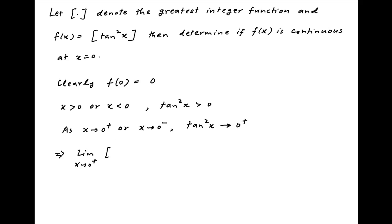Therefore, the limit of the integral part of tan square x as x tends to 0 from the positive side is equal to the limit of the integral part of tan square x as x tends to 0 from the negative side, and both of these are equal to 0.